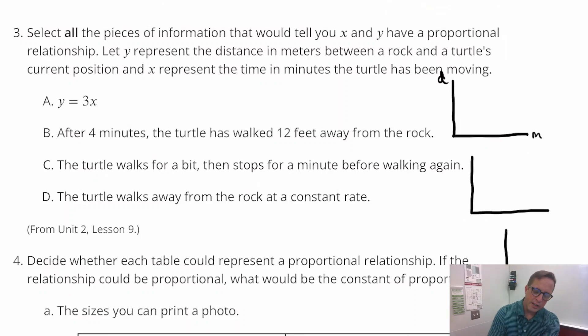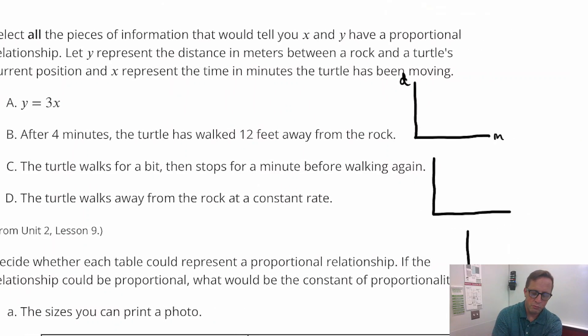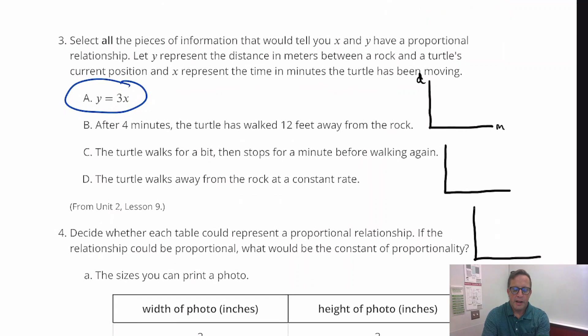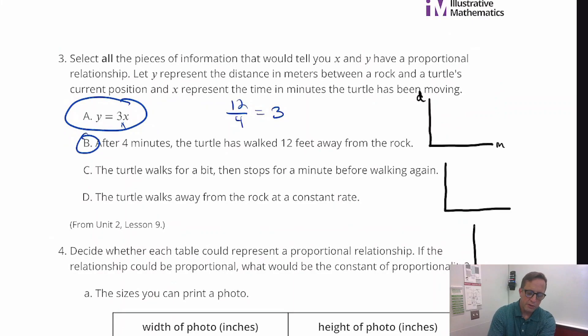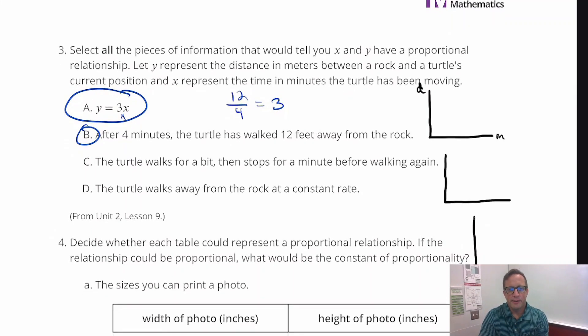So you've got Y equals 3X. Now that's got a constant of proportionality, just by design, just by the way it looks. Because it's in that Y equals KX format, that is proportional. After four minutes, the turtle has walked 12 feet away. So if we just do 12 divided by 4, you get 3, which is what that is right there. So that's a constant of proportionality as well. So that's a proportional relationship. That is indeed proportional.